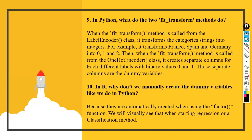fit_transform is basically a combination of fit and transform. We can substantiate it with examples — label encoder and one hot encoder. With label encoder, if we have three countries such as France, Spain, and Germany, the system automatically allots values of 0, 1, and 2 to convert the data from categorical into integer. When using one hot encoder, it creates separate columns for each label with a binary value of 0 and 1, and also separates columns for dummy variables which can be removed later. This is what fit_transform does in Python.